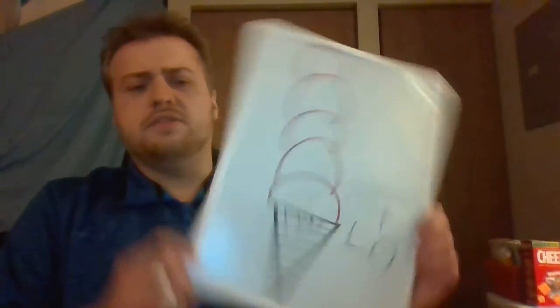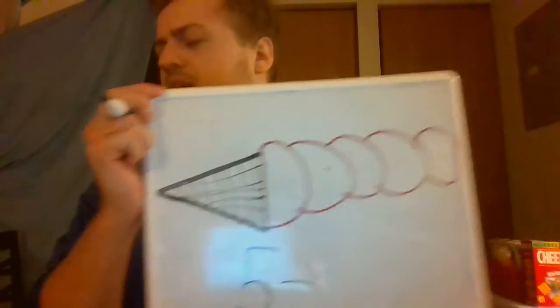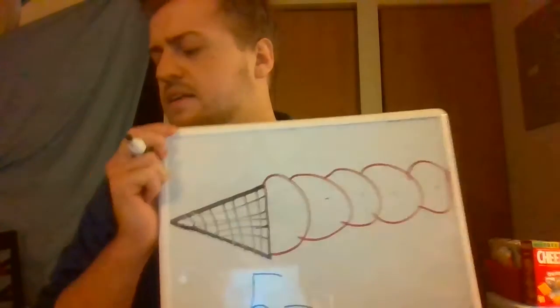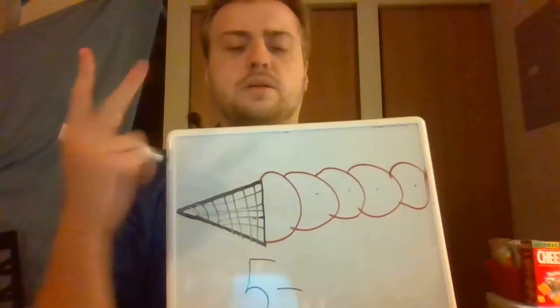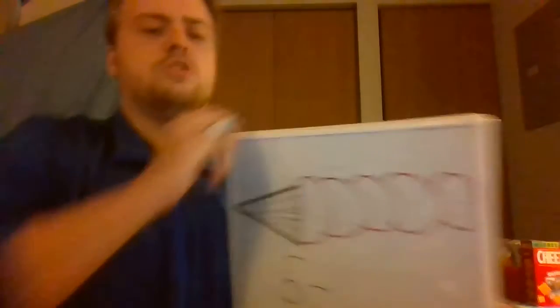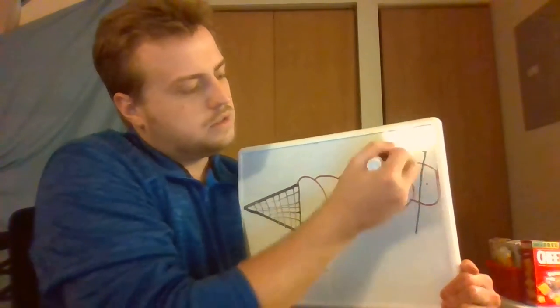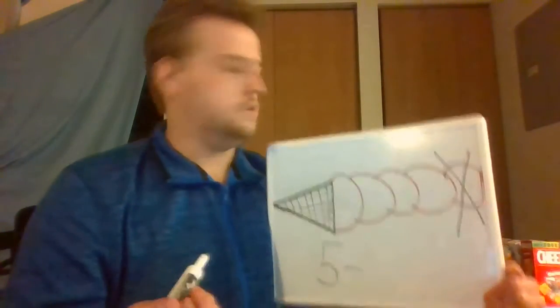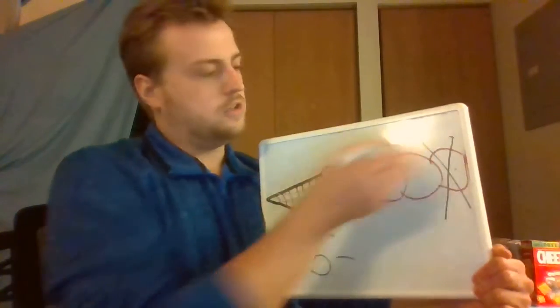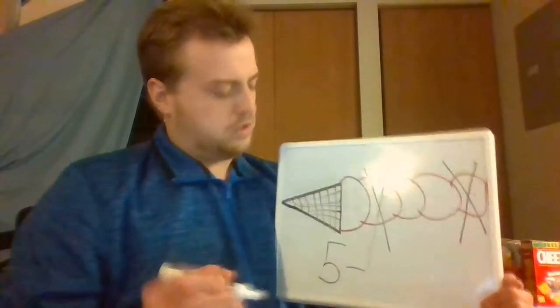Mr. Spivey has five ice cream scoops. Then Mr. Spivey ate two ice cream scoops. So let's cross off two ice cream scoops. Does it matter which ones we do? No. So I'll cross off that one and that one right there.